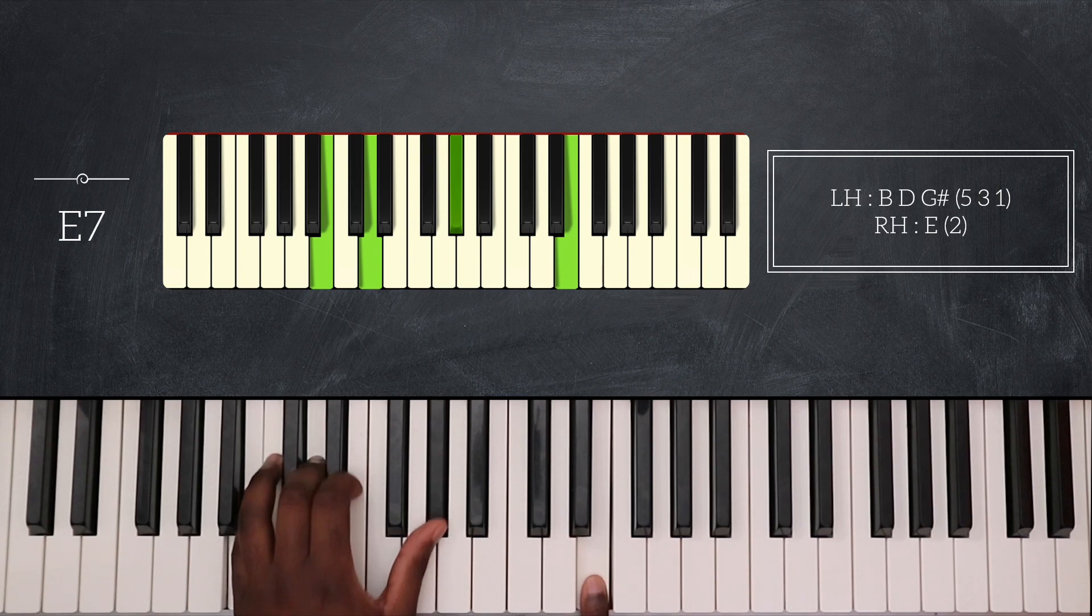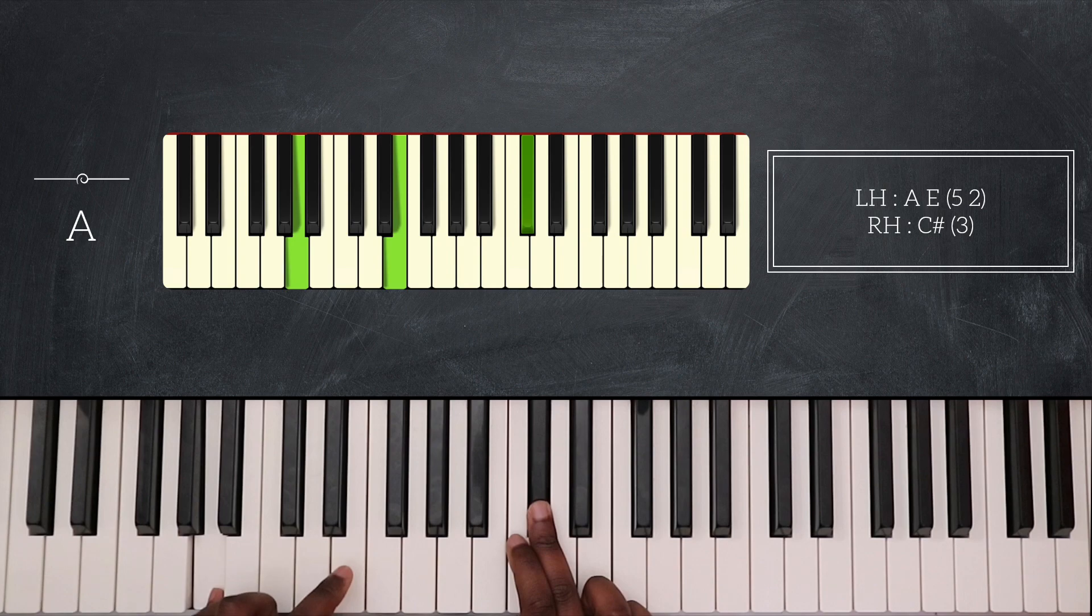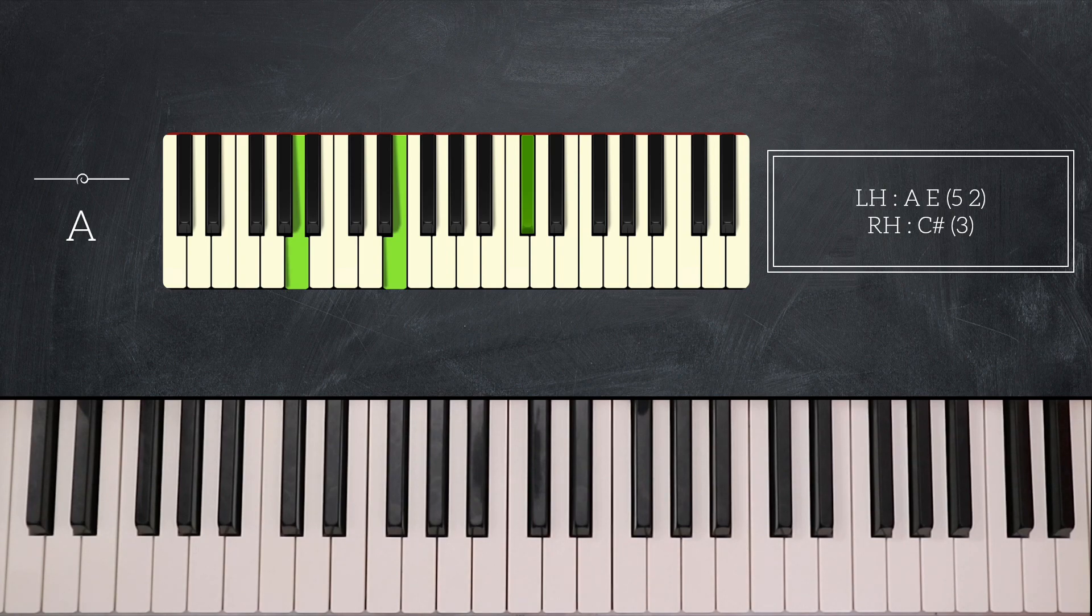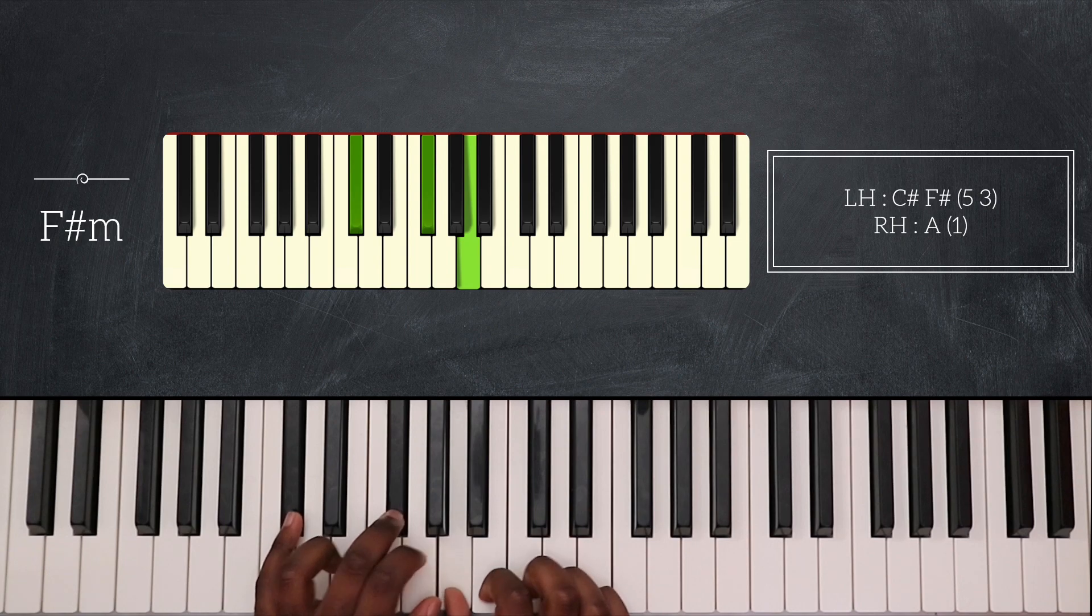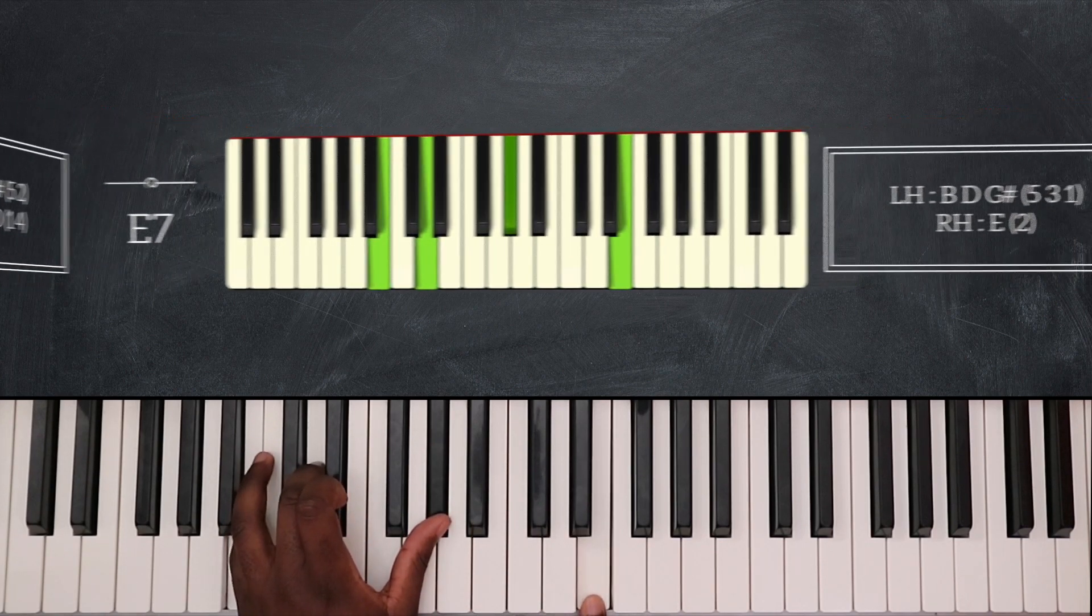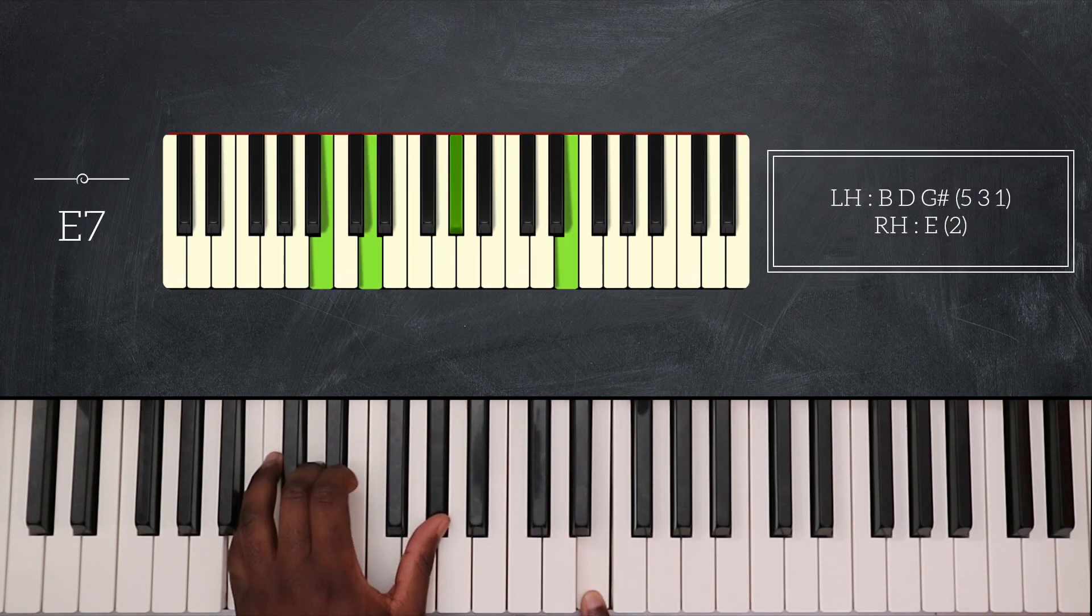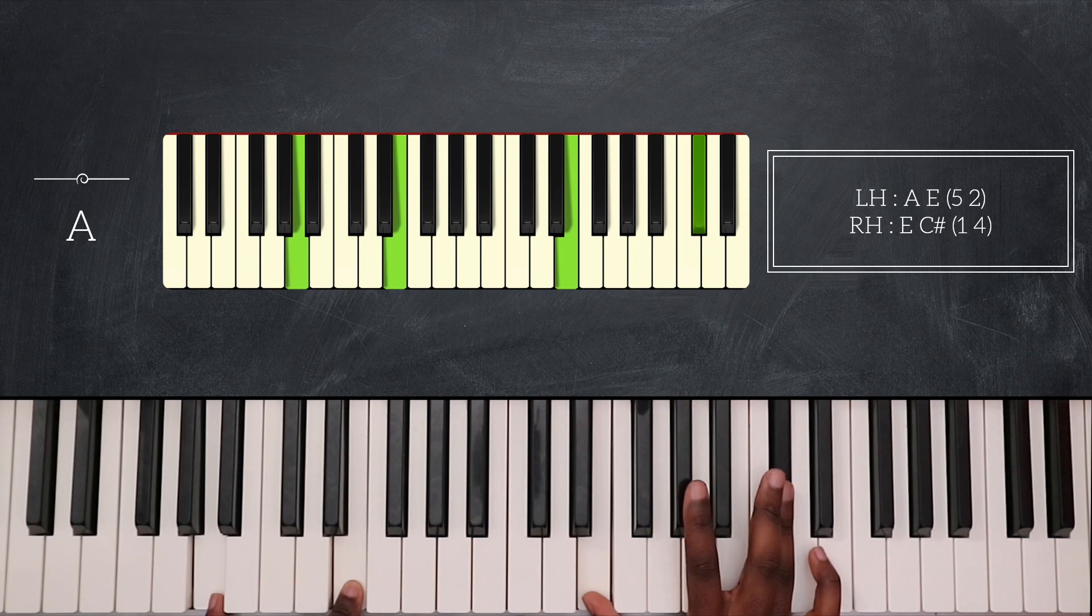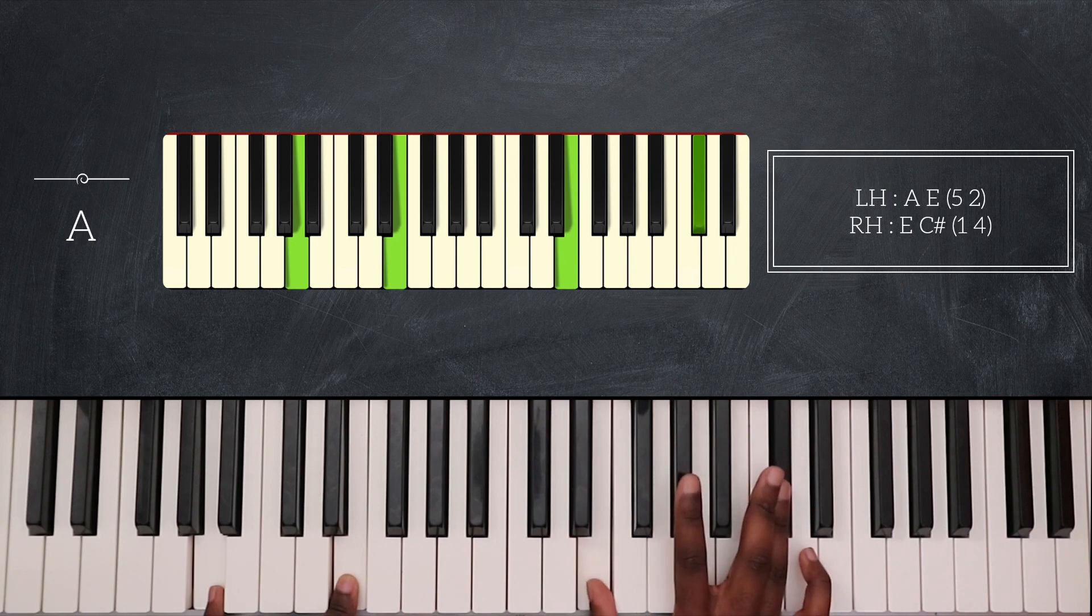And finally I'll play A major. That's A and E for my left hand, and C sharp with my third finger on my right hand. After that I'm going to repeat that same progression. So F sharp minor, B minor 7, E7 and then I'll play A but this time I'll play E and C sharp on my right hand. So I still have A and E on my left hand, but now I'm playing E with my thumb on my right hand and C sharp with my fourth finger.